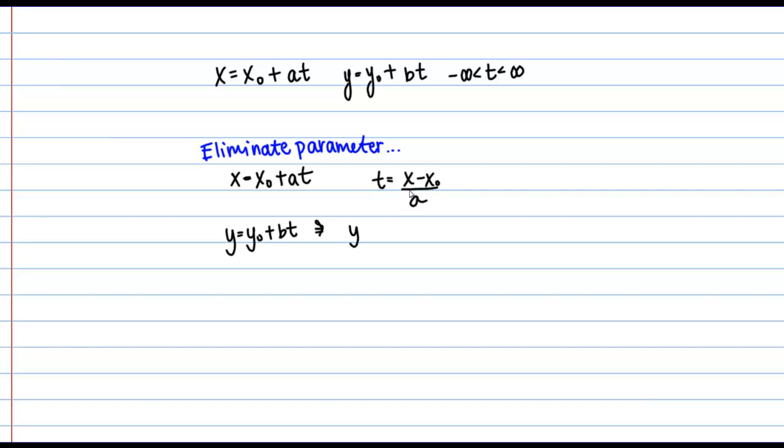So Y equals Y₀ plus B times this expression for T, which is X minus X₀ over A. Let's rearrange this to see if we can recognize the form. I can write this as Y equals Y₀ plus B over A times X minus X₀.